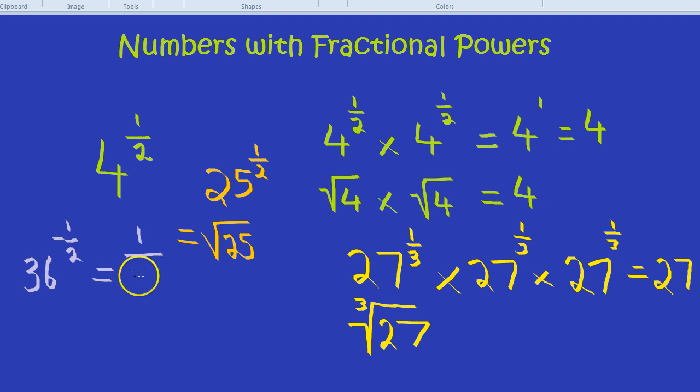That minus has the effect of making it the reciprocal. The reciprocal of 36 is 1 over 36. The reciprocal of 2 over 3 is 3 over 2. That's what the minus does. What about the half? Well, as we've just seen, the half makes it square root.